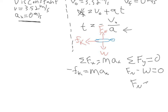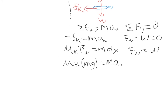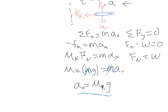So normal force equals weight. In the x direction, kinetic force of friction equals mu_k times the normal force, which equals ma. We can substitute in our normal force: mu_k times weight — substituting mg for weight — equals ma. Solving for acceleration, our masses cancel out, and we're left with acceleration equals mu_k times g (the coefficient of friction times gravity). That's what we'll plug in for a.